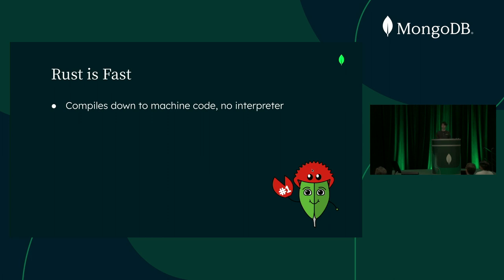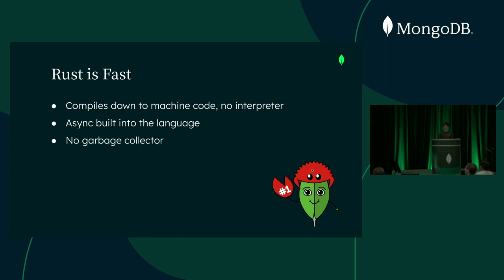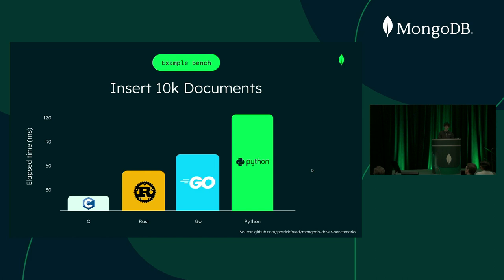This makes Rust faster than languages like Python or JavaScript that need to be run through an interpreter. And because there's no interpreter, there's also no global interpreter lock like we have in Python, so threads in Rust can achieve true parallelism. Additionally, with async being built into the language, it makes it really easy to write highly concurrent code that takes advantage of that parallelism, which can make a huge difference for performance. And lastly, Rust doesn't have a garbage collector like Go, Java, or C#. Since the overhead of a garbage collector can sometimes be a lot, not having one can lead to much faster programs. Here's a pretty simple benchmark of how long it took drivers in various languages to insert 10,000 small documents. Rust is a decent bit faster than Go and much faster than the Python driver.